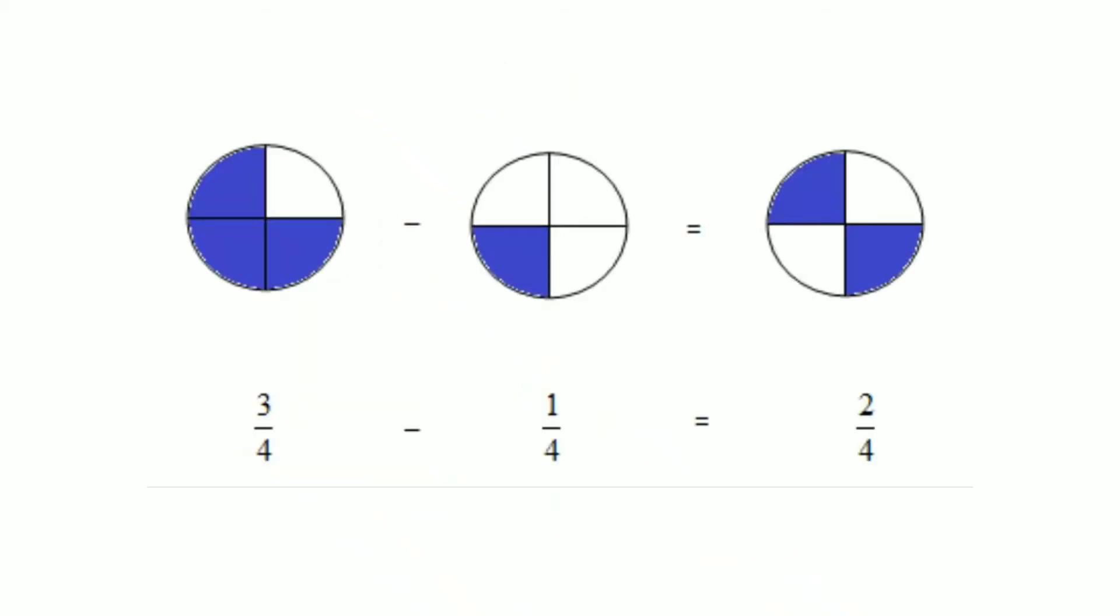Here is one more example: 3 by 4 minus 1 by 4. 3 minus 1 is 2. Write the common denominator, that is 4. So our answer is 2 by 4.